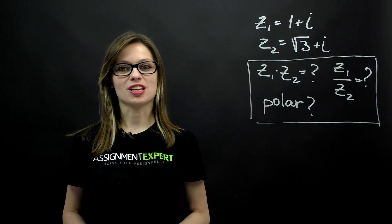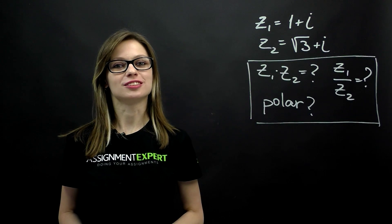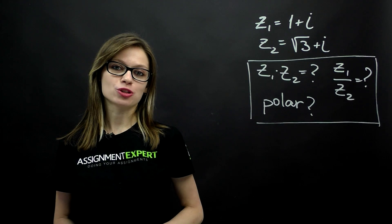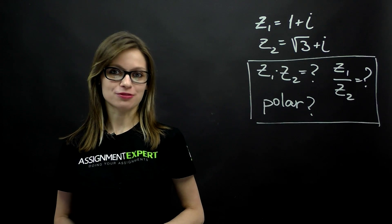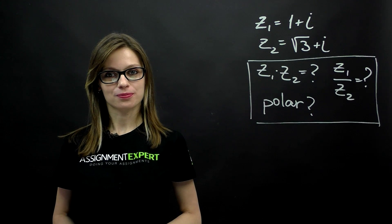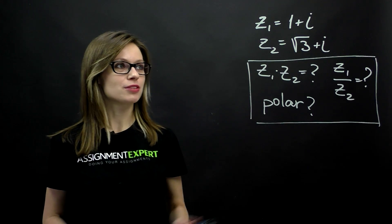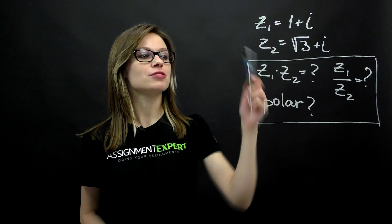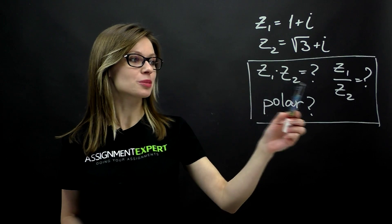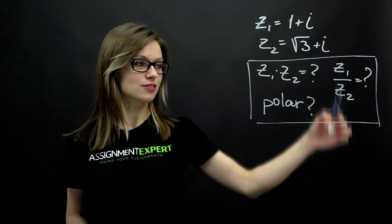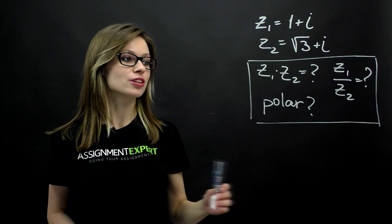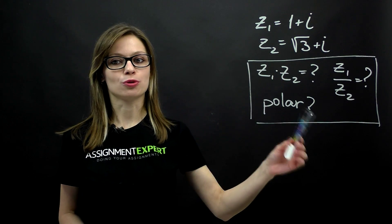Hello, you're watching Assignment Expert Channel. Today we're discussing the question from Chris from Bulgaria. Given two complex numbers, we need to find the result of their multiplication, division, and also we need to convert them into polar form.